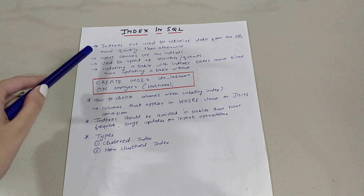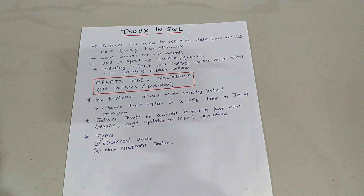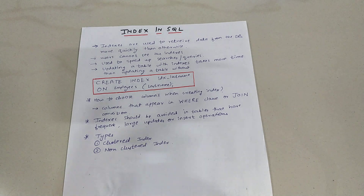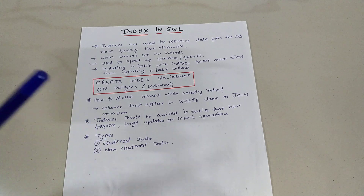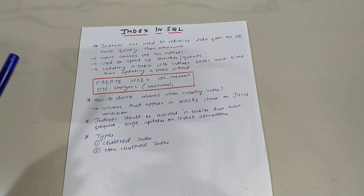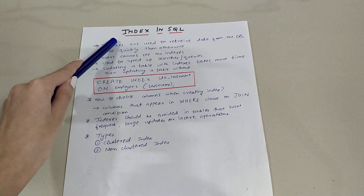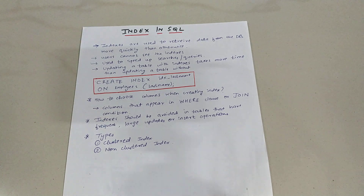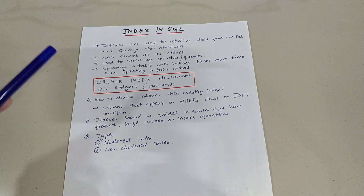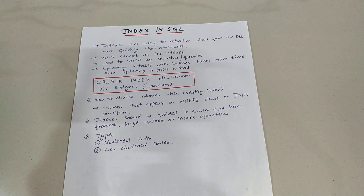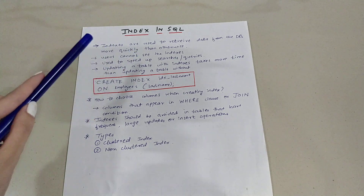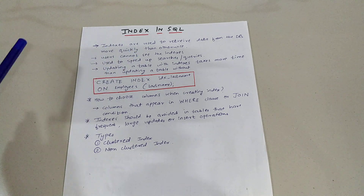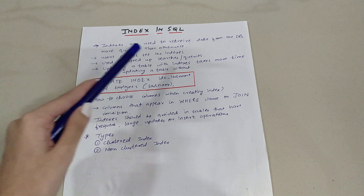retrieve data from the database more quickly than otherwise. For example, if you have a SELECT query and a particular table has a lot of values, it can take a lot of time to give you the result. Indexes are used so that you get the output of that particular SELECT query quicker. Users cannot see the indexes — they are created but users cannot see them. They are used to speed up searches or queries.